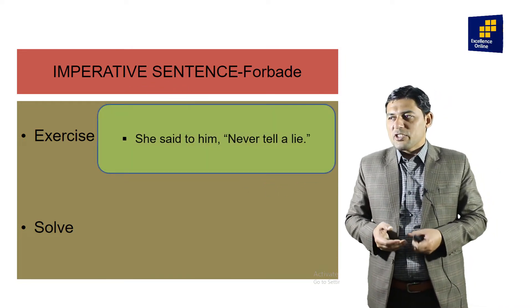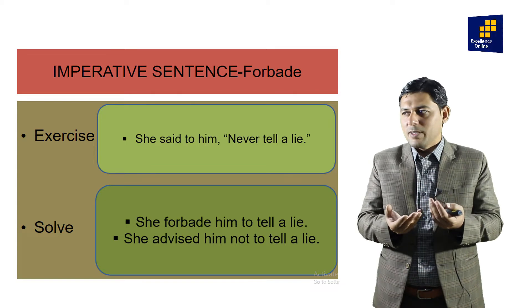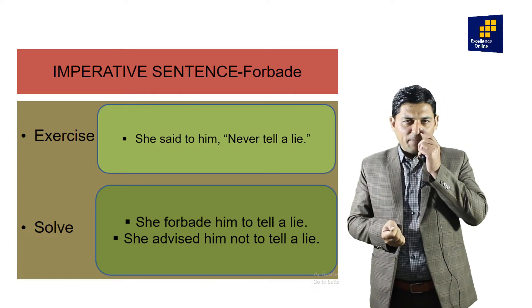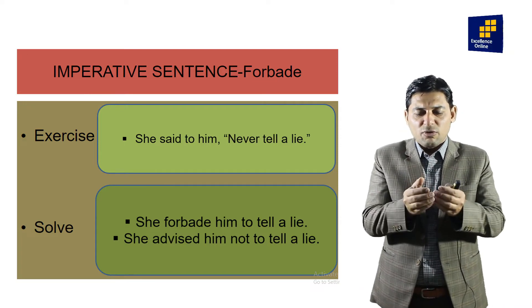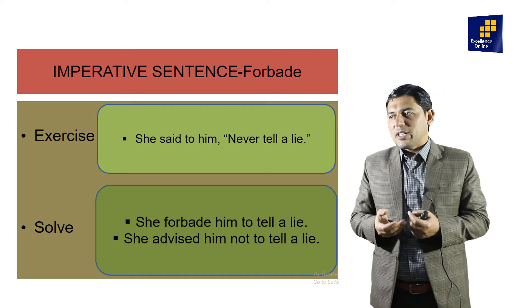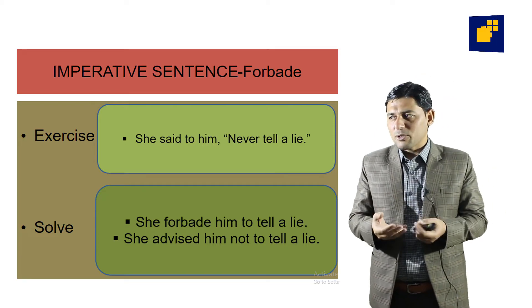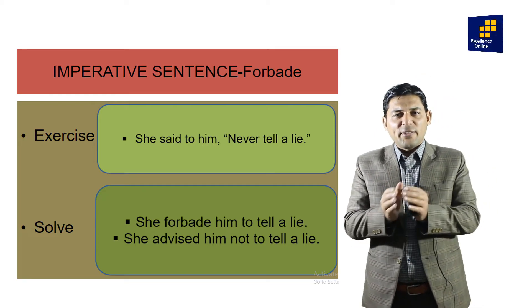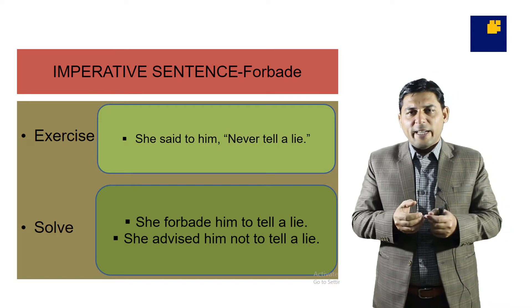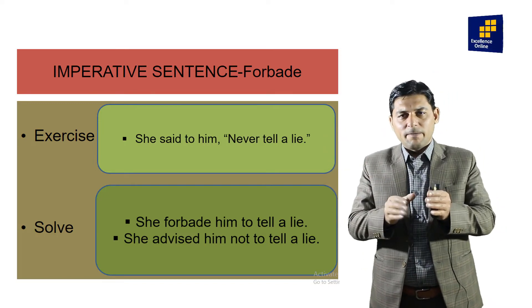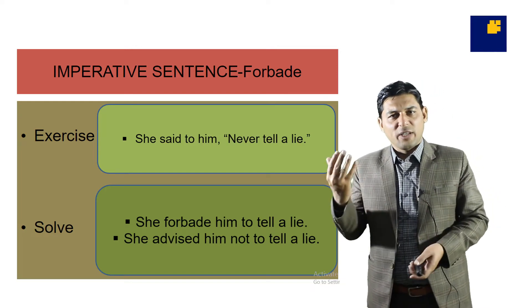Example: 'She said to him, never tell a lie.' First method: 'She forbade him to tell a lie.' Here 'never' is changed into 'forbade' and since 'forbid' is already negative, there is no need to use 'not.' The structure 'She forbade him not to tell a lie' is wrong — it has a double negative. Second method: 'She advised him not to tell a lie.' Both are correct.